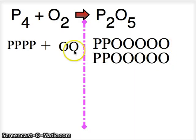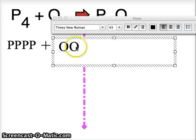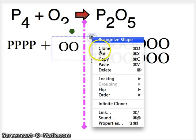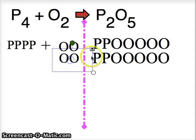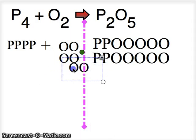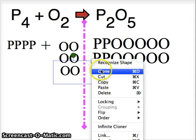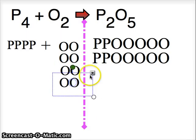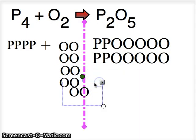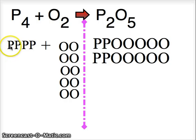So my two oxygen turns into four oxygen, turns into six oxygen, turns into eight oxygen, turns into ten oxygen. Four phosphorus, four phosphorus. Ten oxygen, ten oxygen.